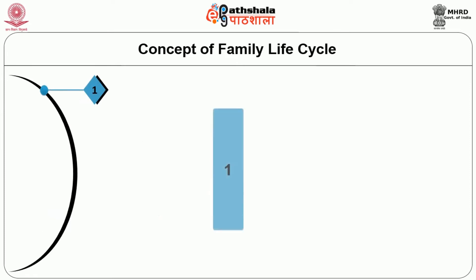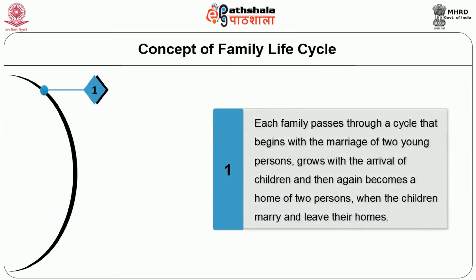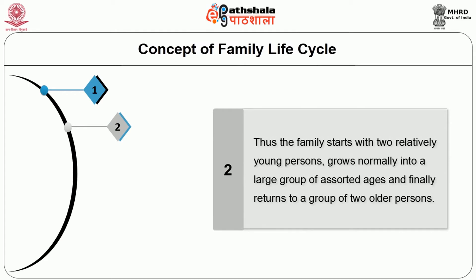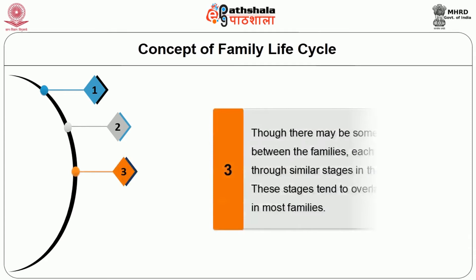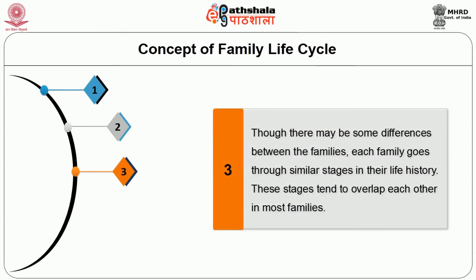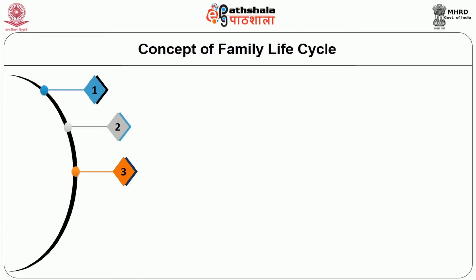The next topic is the concept of family life cycle. Each family passes through a cycle that begins with the marriage of two young persons, grows with the arrival of children, and then again becomes the home of two persons when the children marry and leave. Thus, the family starts with two relatively young persons, grows normally into a larger group of assorted ages, and finally returns to a group of older persons. Though there may be some differences between families, each family goes through similar stages in their life history, and these stages tend to overlap each other in most families.